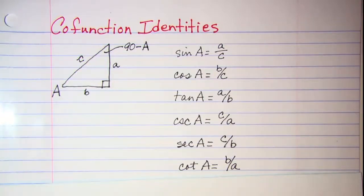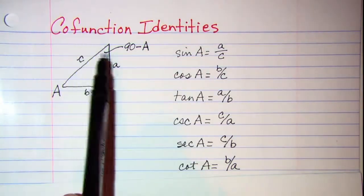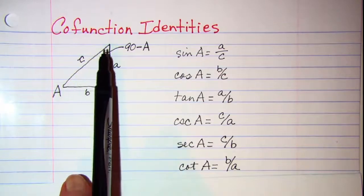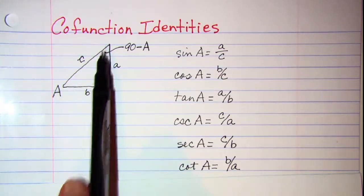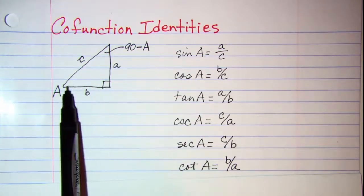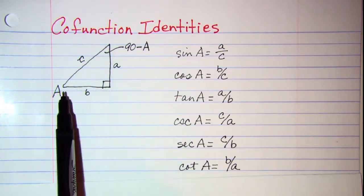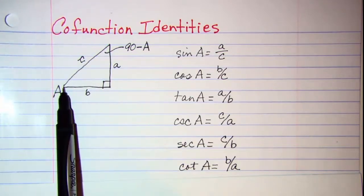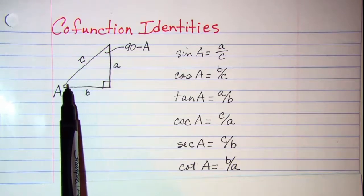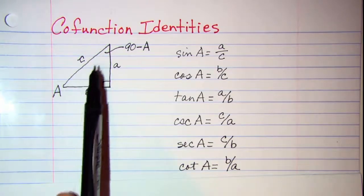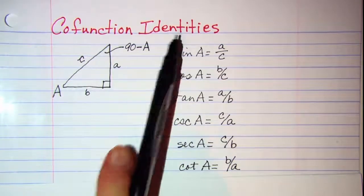In this video we'll be talking about co-function identities. In my diagram I've labeled angle A, but instead of labeling the other acute angle as angle B, I've labeled it as 90 minus A. We know that's true because the angles of a triangle add up to 180 degrees. I've used 90 degrees for the right angle, so the other two acute angles have to add up to 90 degrees. If this one is A, then the other acute angle will be 90 minus A — and I did that for my co-function identities, as you'll see in a minute.